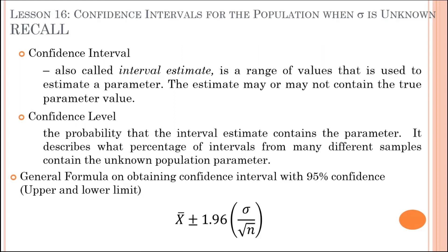Let us recall the previous lesson. A confidence interval, also called the interval estimate, is a range of values that is used to estimate a parameter. The estimate may or may not contain the true parameter value. The confidence level is the probability that the interval estimate contains the parameter — it describes what percentage of intervals from many different samples contain the unknown population parameter.